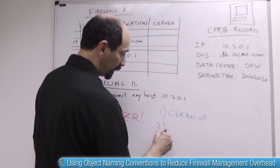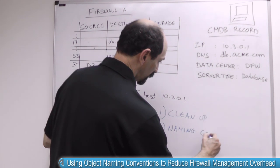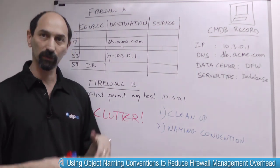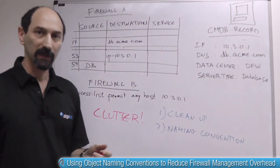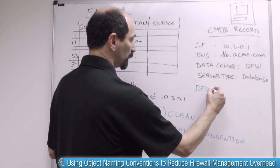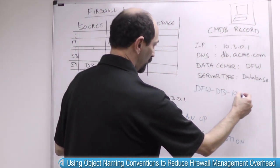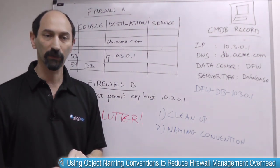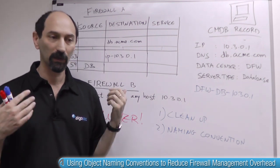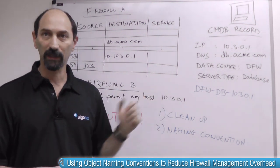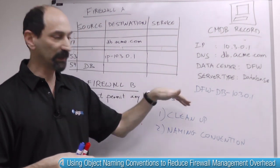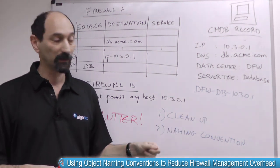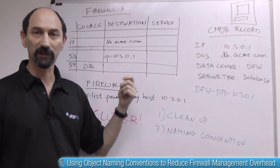The second thing you can do is to define a naming convention. This is a process-oriented solution where you decide how you want to call things. As an idea, you could use names that begin with a data center name, then something about the server type, and then maybe the IP address — and that's going to be the officially sanctioned name in firewall rules for this server. If you educate and train your firewall engineers to always use the same naming convention, they will reuse the same definition over and over and not create duplicates, because when they create a rule for an object that already exists, they will automatically pick the right name and find it.